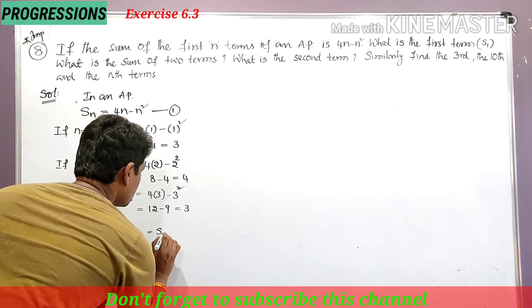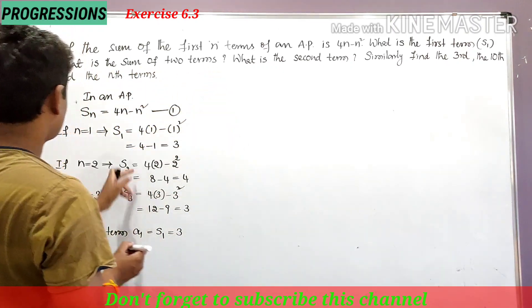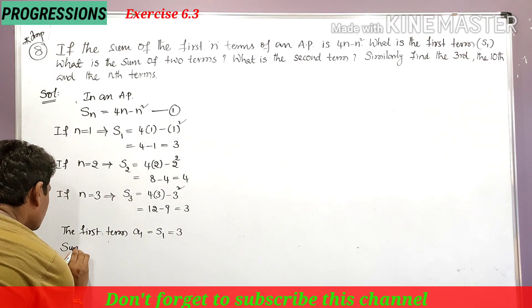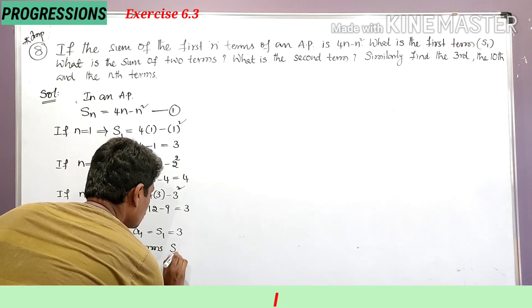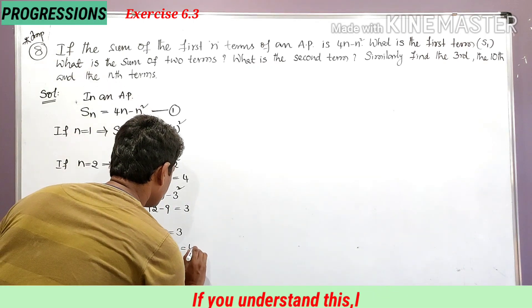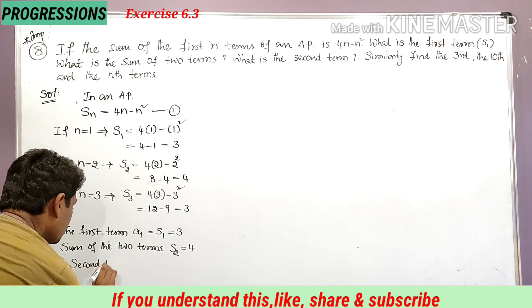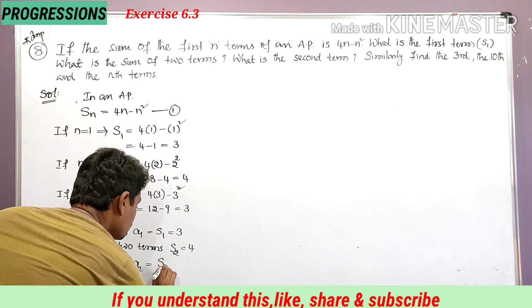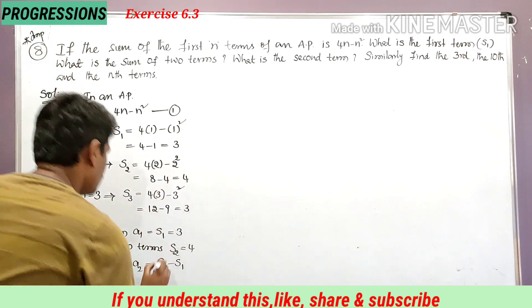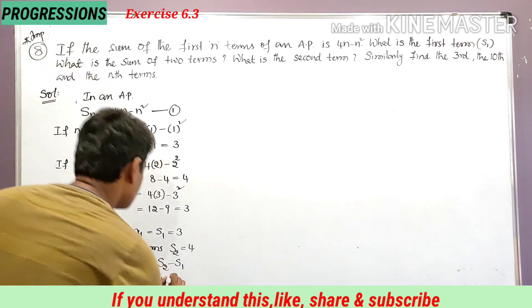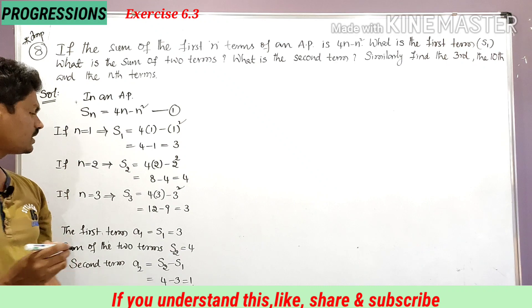The first term a1 = S1 = 3. The sum of the two terms S2 = 4. The second term a2 = S2 − S1 = 4 − 3 = 1. So the second term is 1.